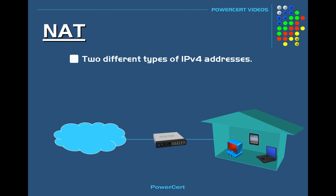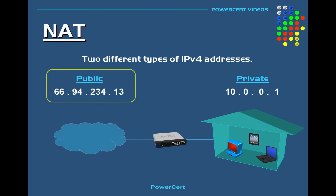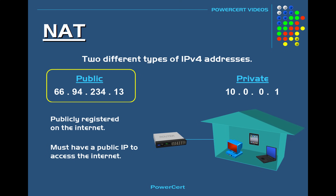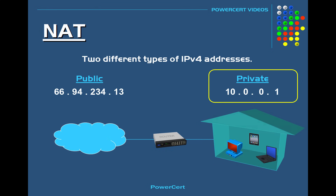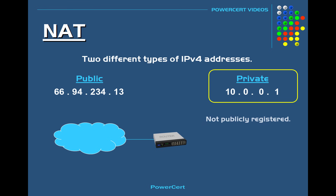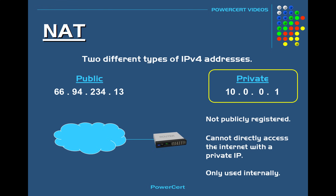There are two different types of IP version 4 addresses: public and private. Public IP addresses are publicly registered on the internet, and you have to have a public IP address if you want to go on the internet. There are approximately 4 billion public IP addresses available, so they are limited. Private IP addresses are not publicly registered, so you cannot directly access the internet with a private IP. Private IP addresses are only used internally, such as inside a home or business.